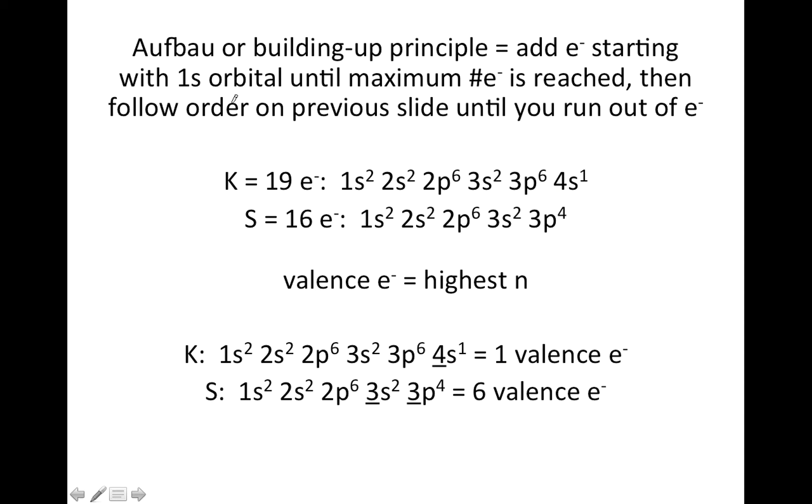So the strategy for writing electron configurations is called the Aufbau Principle, or Building Up Principle, where we're just going to simply add electrons, starting with the 1s, and when that one's full, we just keep adding electrons in the order that I wrote on the previous slide until we run out.